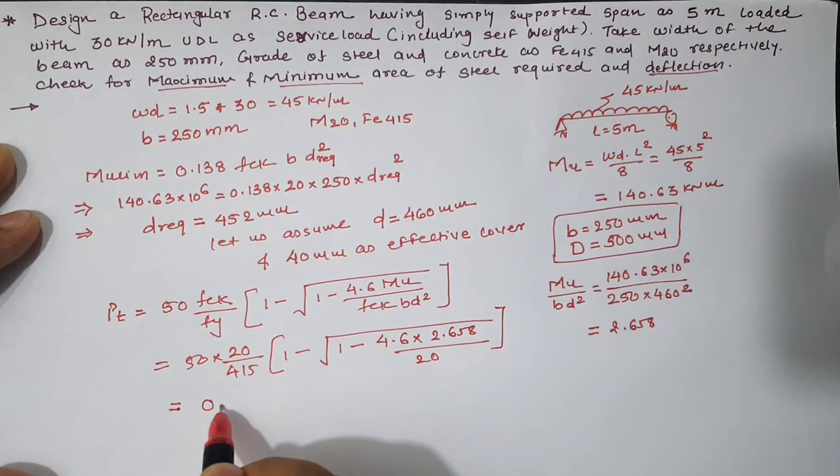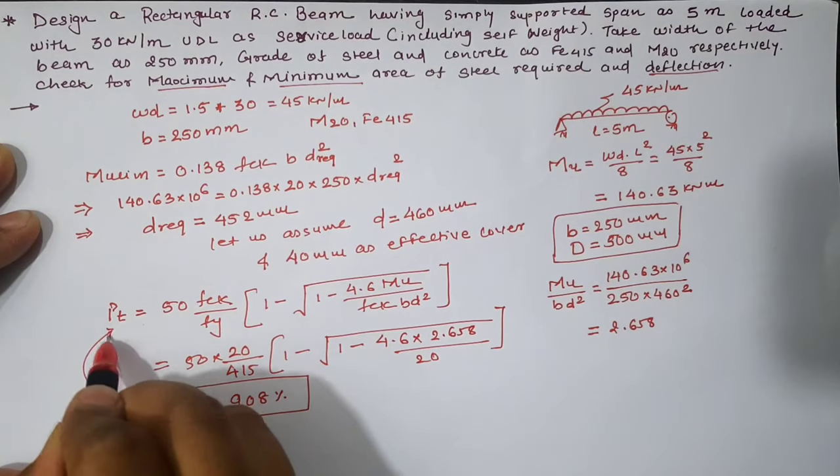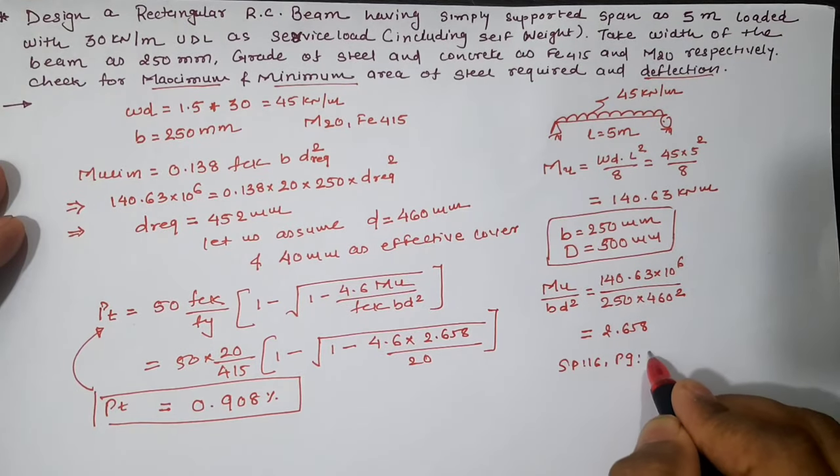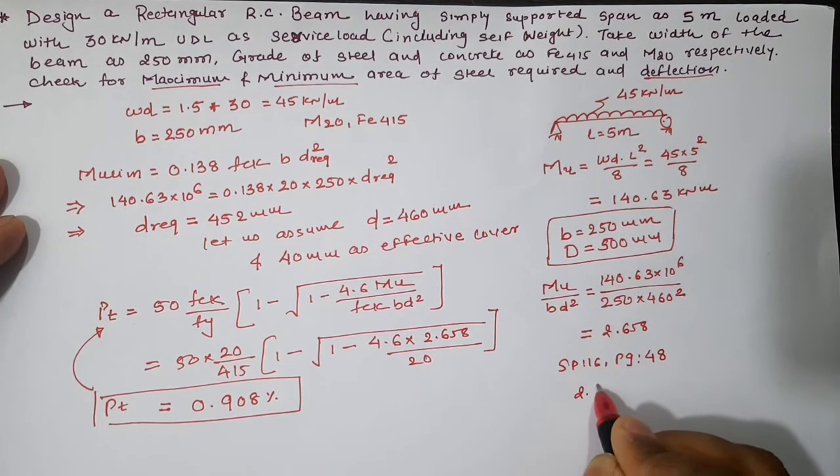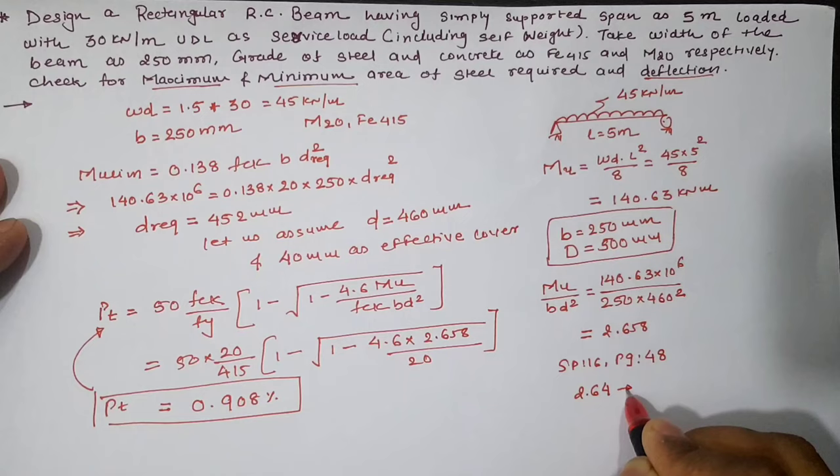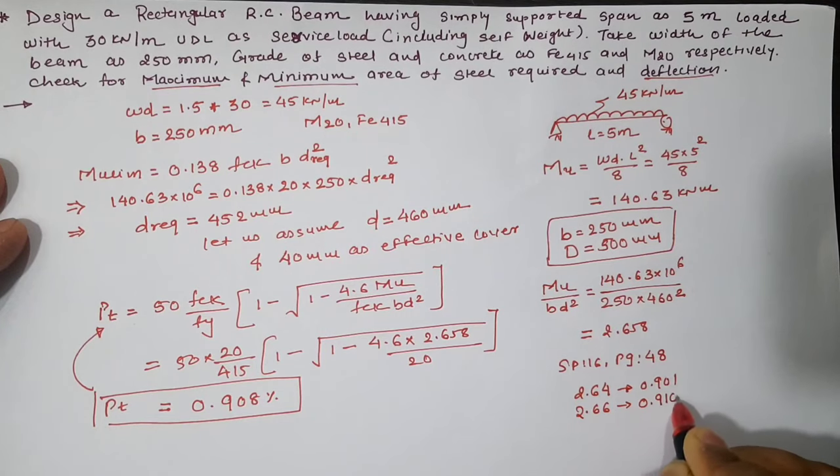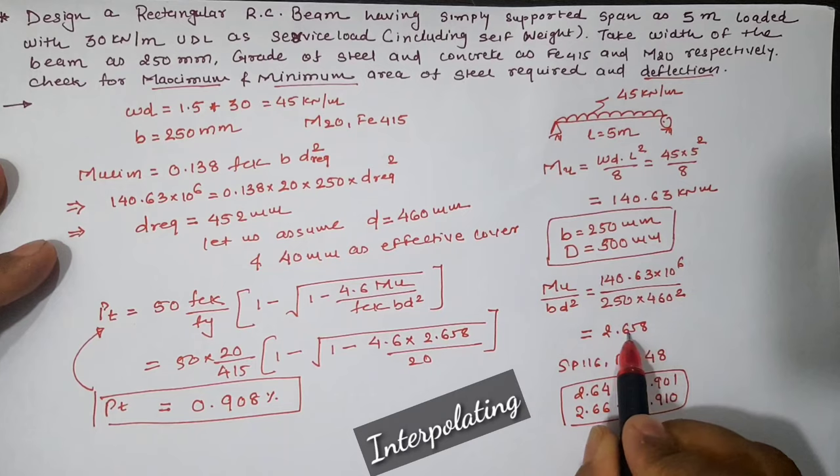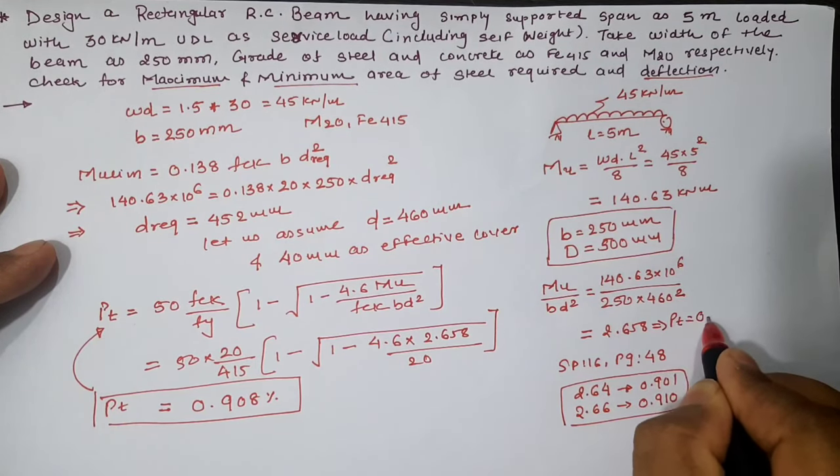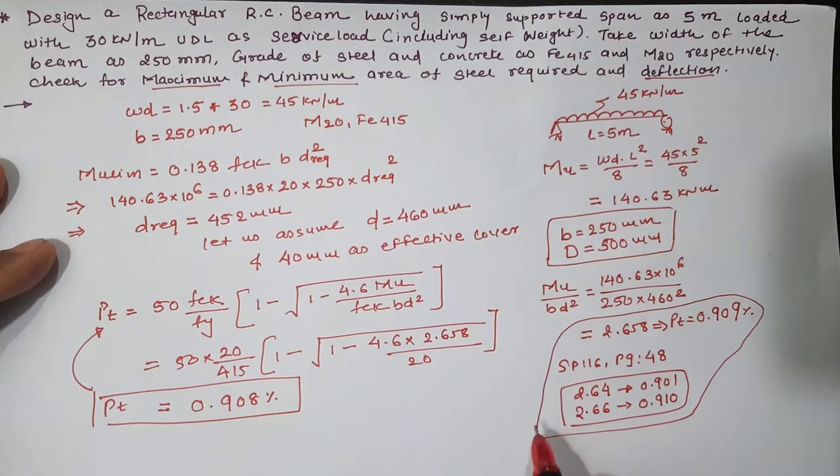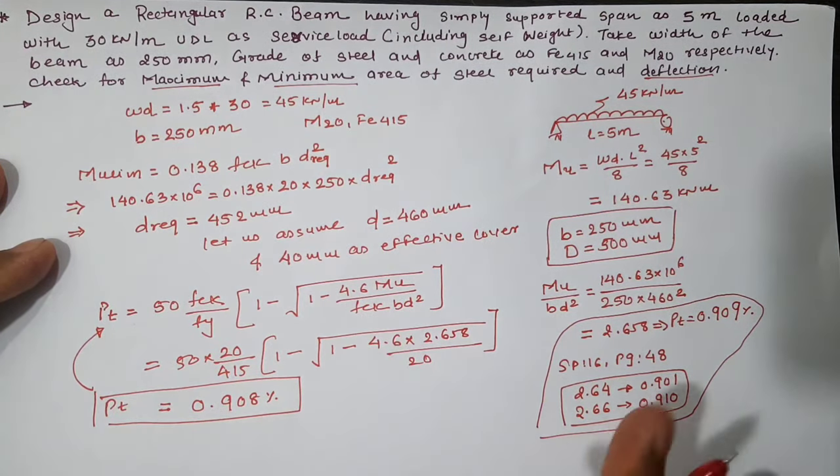Let us put this value in the Pt equation, which gives Pt equal to 0.908% according to the calculation. Now from SP16 page number 48, for 2.64 Pt is 0.901, for 2.66 Pt is 0.910.